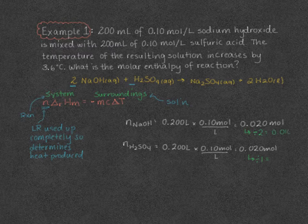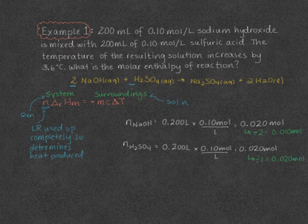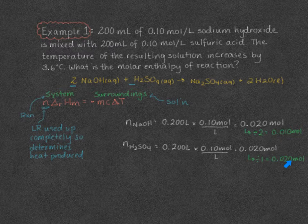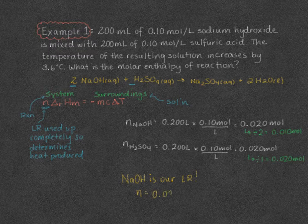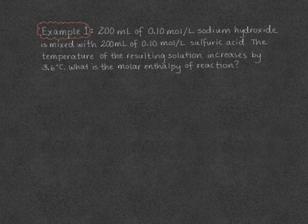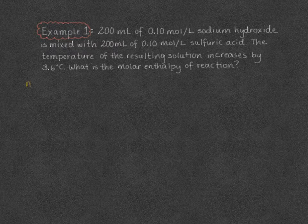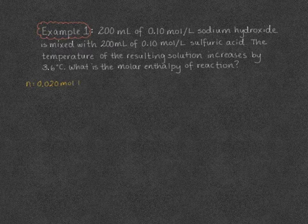This gives us relative numbers of moles that are directly comparable. We have fewer relative moles of sodium hydroxide than of sulfuric acid, so NaOH is our limiting reagent. Therefore, N in our equation is going to be 0.020 moles of NaOH.